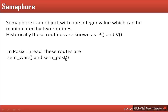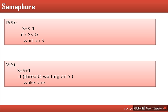So a semaphore is basically an integer variable with a value, and this value can be accessed or manipulated by only two operations, and these operations are atomic. The P operation decreases the value of S, and if this value is less than 0, it will keep on waiting.